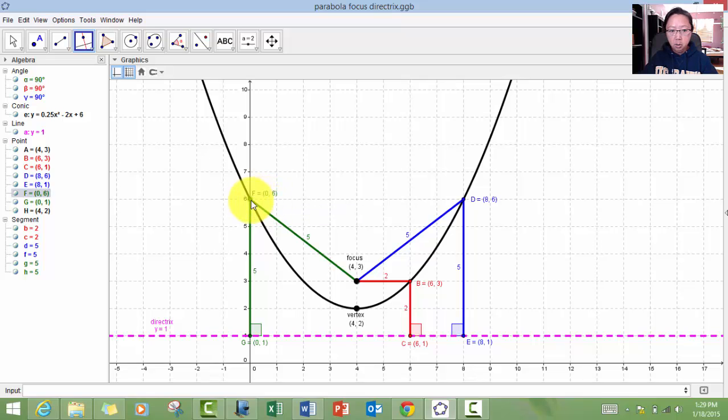a point F called 0, 6, it's 5 units away from the focus. It's also 5 units away from a point on the directrix with that particular line.